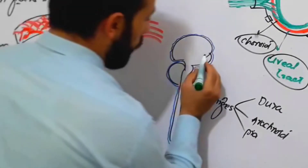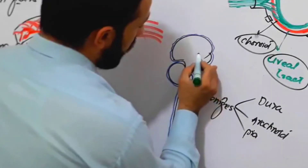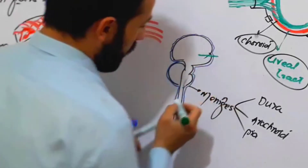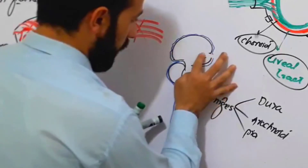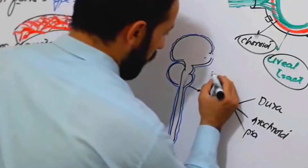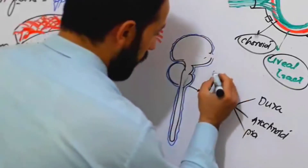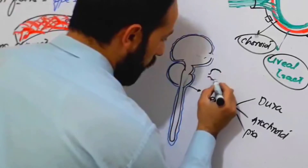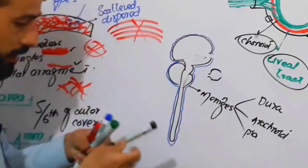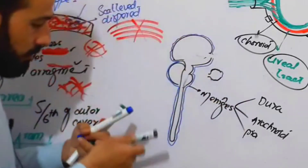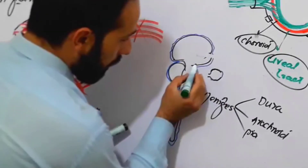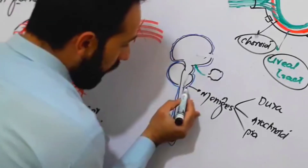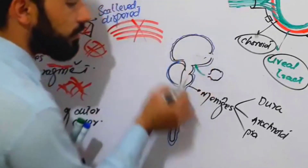Look carefully. When the optic nerve arises from your brain, for example, if this is your eye here, this is your cornea. The optic nerve is also covered with these meninges.